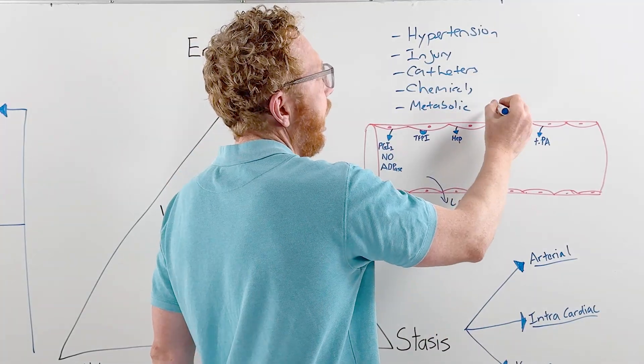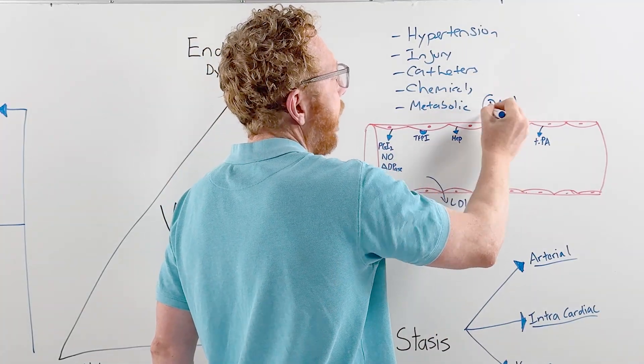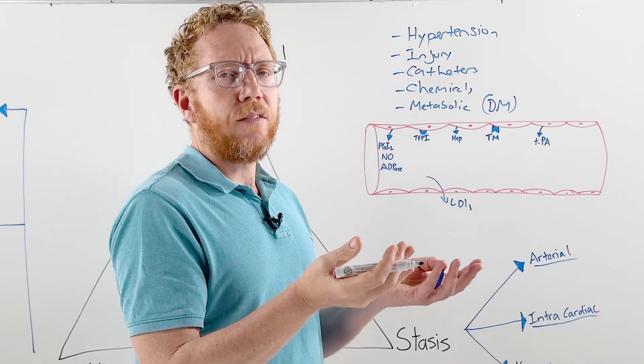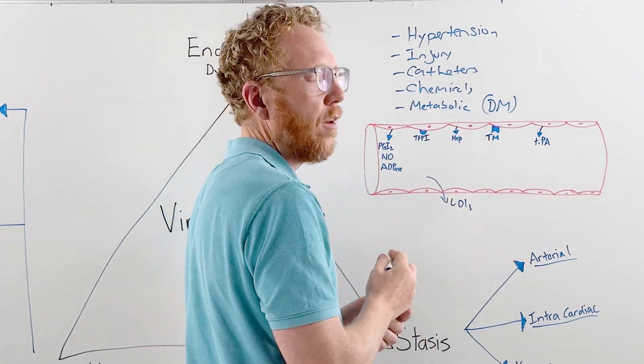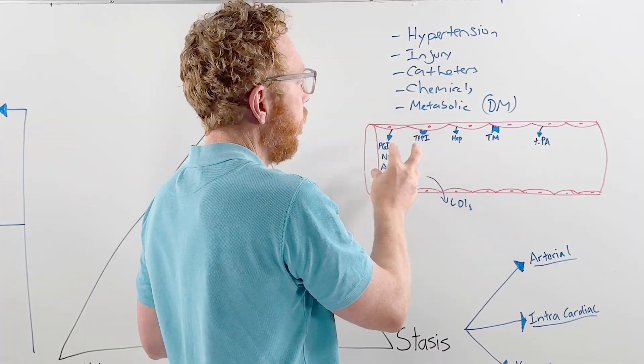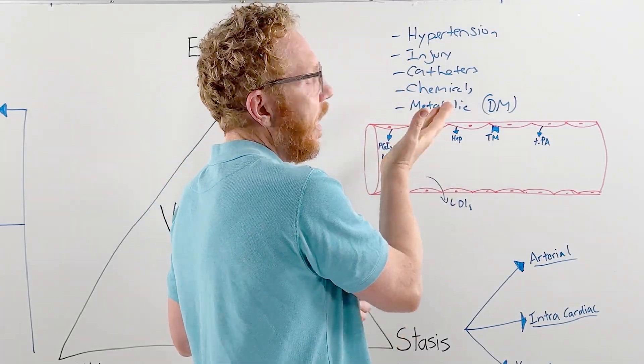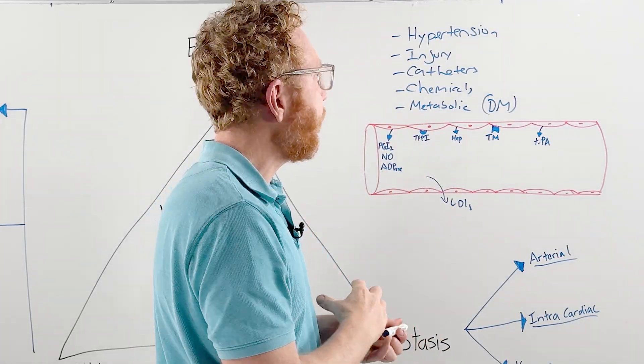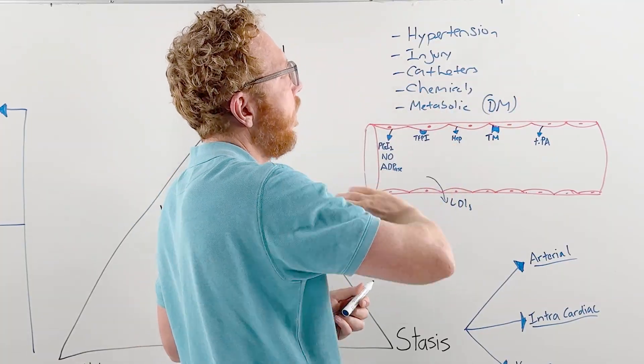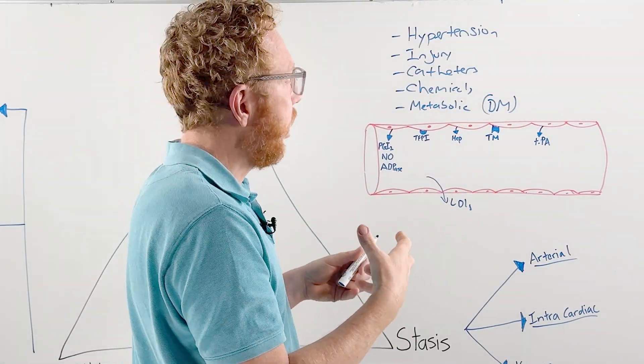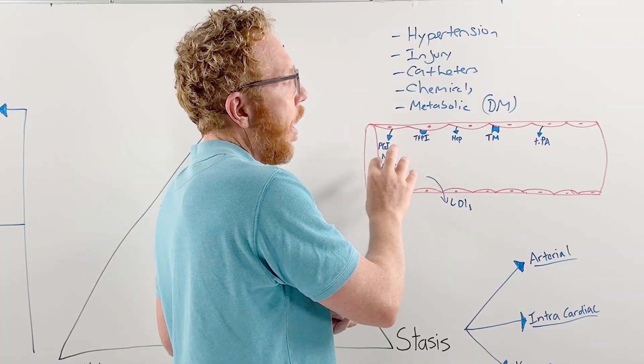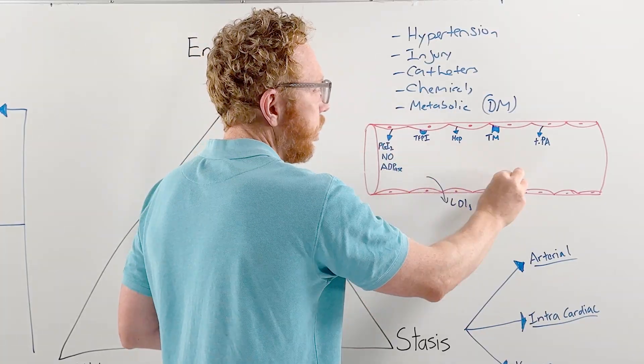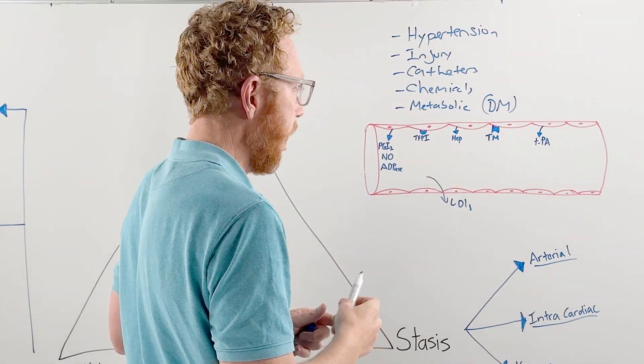Another cause is diabetes mellitus, which is metabolic. High amounts of glucose over a long period can glycosylate the endothelium, making it dysfunctional, decreasing these factors, and increasing the likelihood of clots forming. Chronic inflammation is also playing a big role because those cytokines, those pro-inflammatory chemicals, can also cause dysfunction to the endothelium.